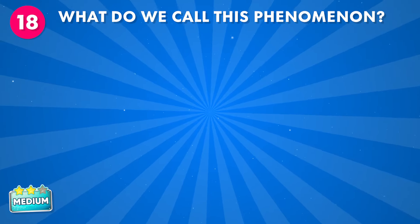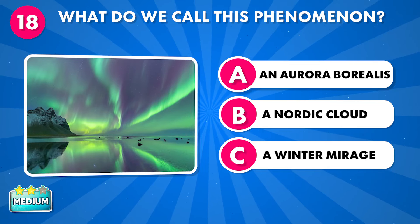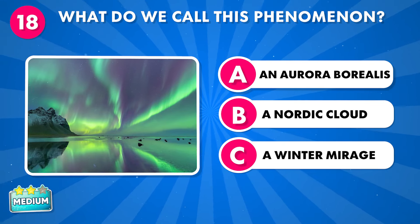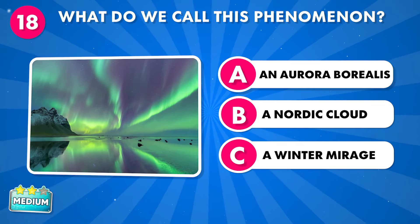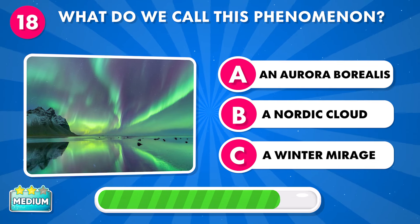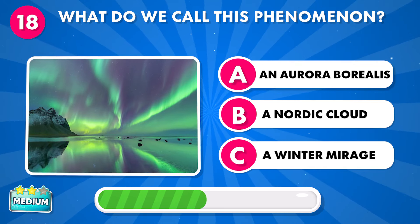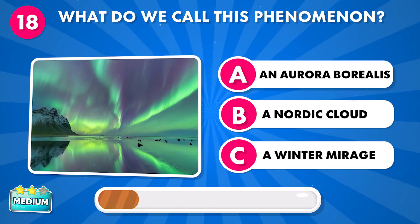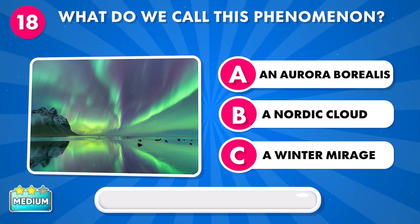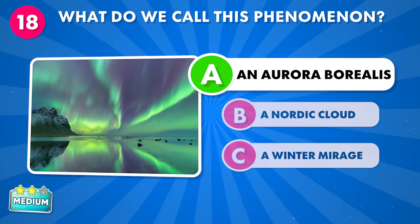What do we call this phenomenon? A: an aurora borealis, B: a Nordic cloud, C: a winter mirage. It's an aurora borealis.